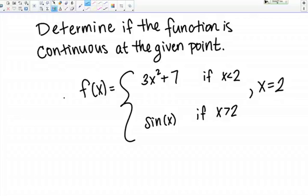Here we have f of x, and it's defined as a piecewise function, so f of x equals 3x squared plus 7 if x is less than 2, and f of x equals sine of x if x is greater than 2, and the point that we're trying to look at is x equals 2.